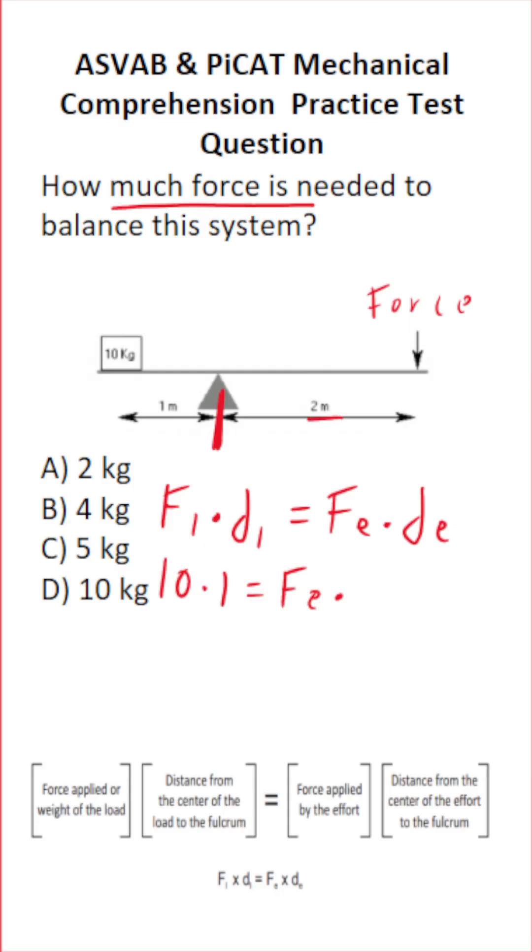So this is F_E times 2. Again, we're solving for F_E, so 10 times 1 is 10, equals 2 F_E.